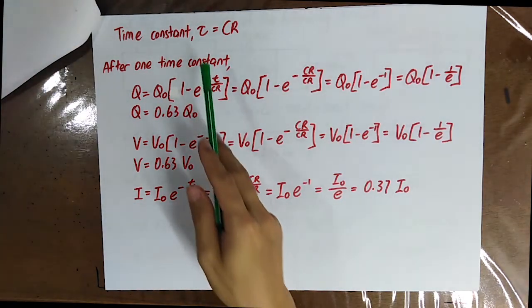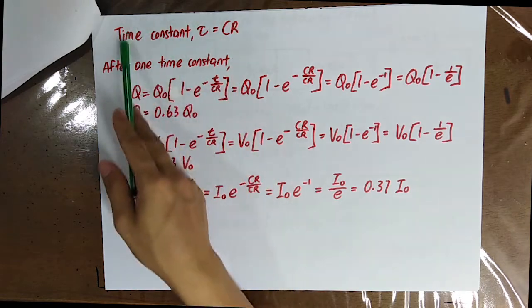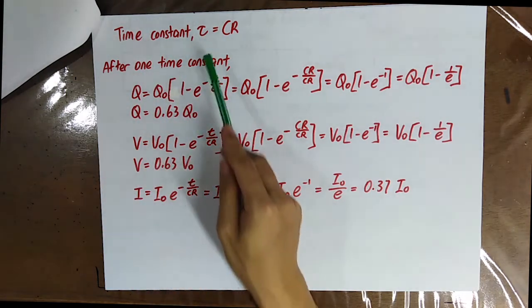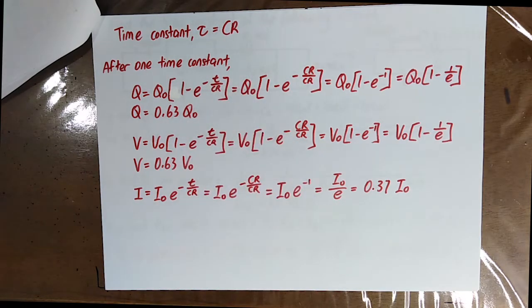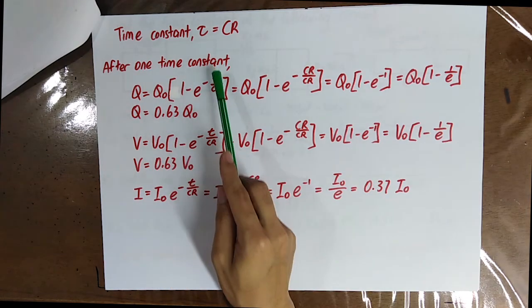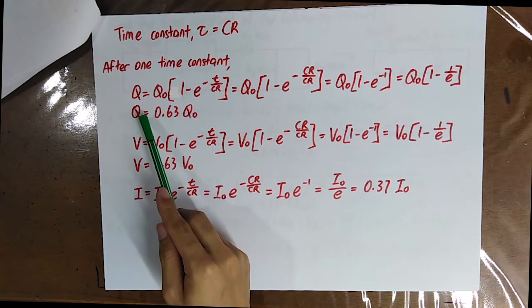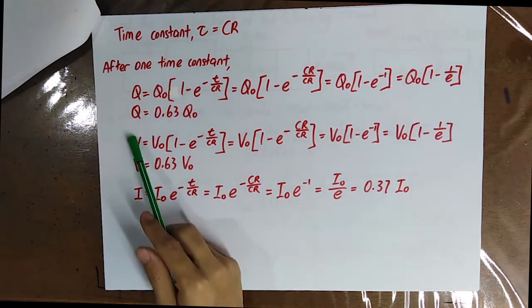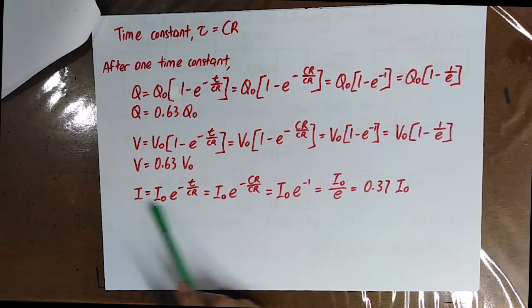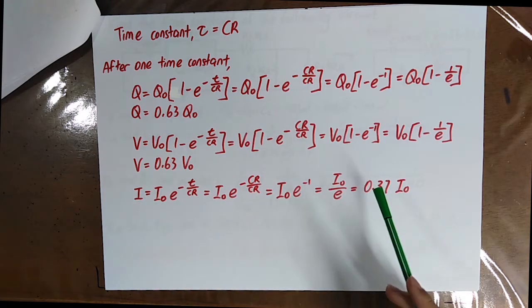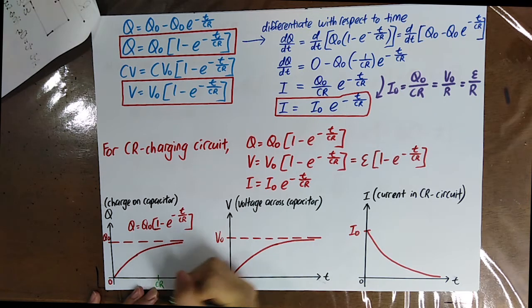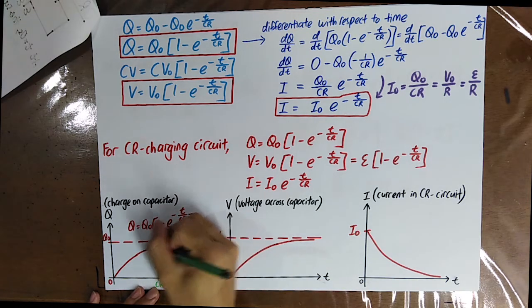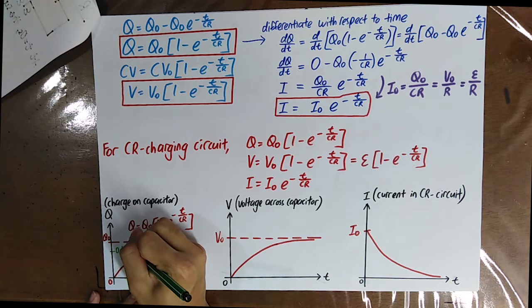One more variable to introduce is the time constant tau. One time constant equals C times R. After one time constant, the charge Q is now 0.63 Q0, V is now 0.63 V0, and I is now 0.37 I0. So after one CR, you get 0.63 Q0.